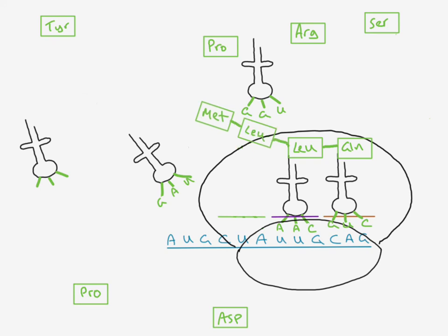This process continues until the ribosome reaches a stop codon on the messenger RNA. At that point, the whole sequence of amino acids detaches from the ribosome. It will then be modified — this most likely takes place in the endoplasmic reticulum — and the sequence of amino acids can move from the rough ER to the Golgi apparatus, where it is folded and modified until we have our final protein.